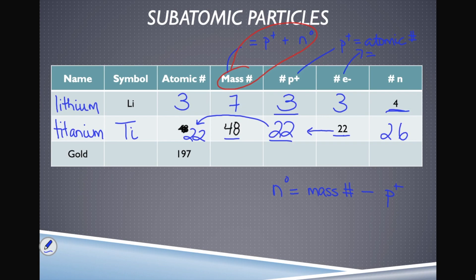Last example: gold, which we've already talked about today. Gold has the symbol Au. There's a typo in the example — 197 is the mass number, not the atomic number. Gold's atomic number is 79, which you can find on the periodic table. That means an atom of gold has 79 protons and 79 electrons.